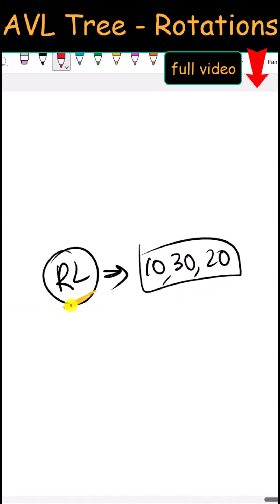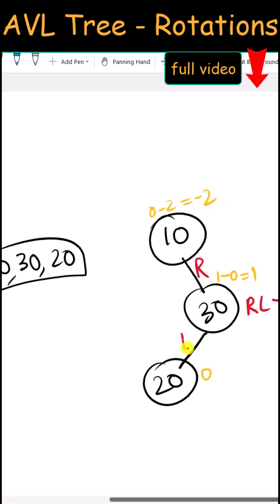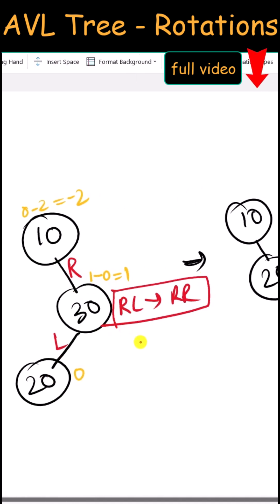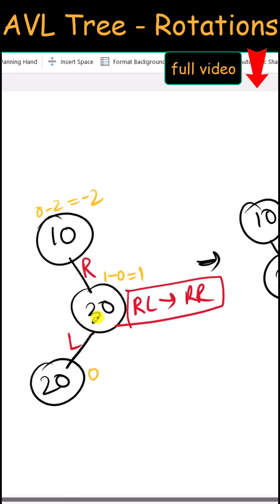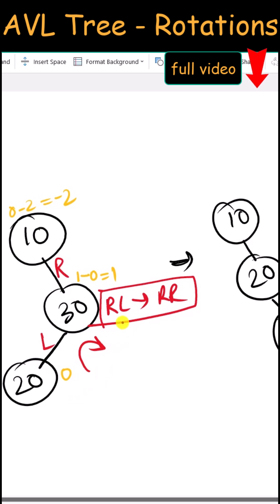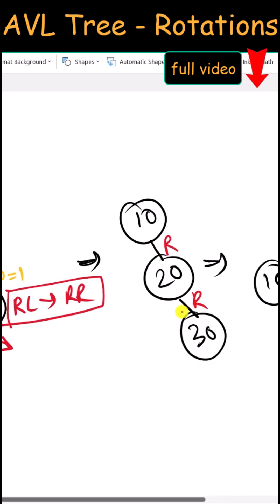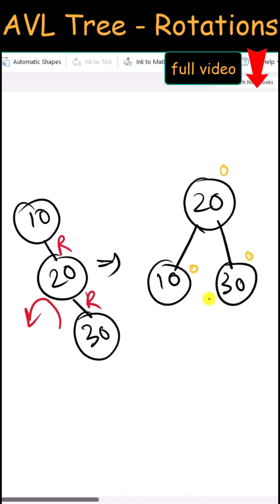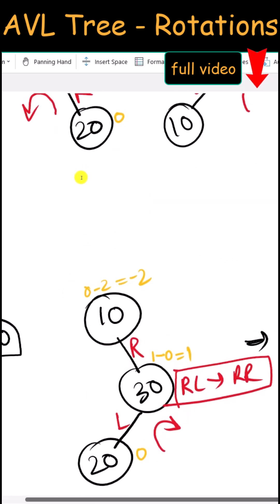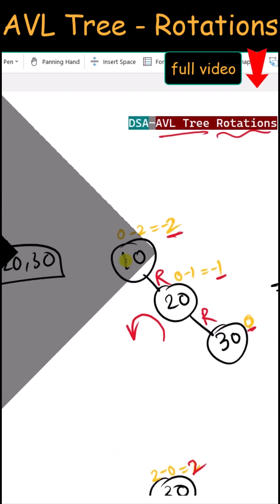Finally we have the RL rotation. To balance this, first we have to convert from RL to RR — that means we have to rotate nodes 30 and 20 clockwise. After that rotation we have converted from RL to RR. Now we have to rotate this anti-clockwise, and finally we have a balanced tree. These are the different rotations we can use to balance our AVL tree. Thank you.